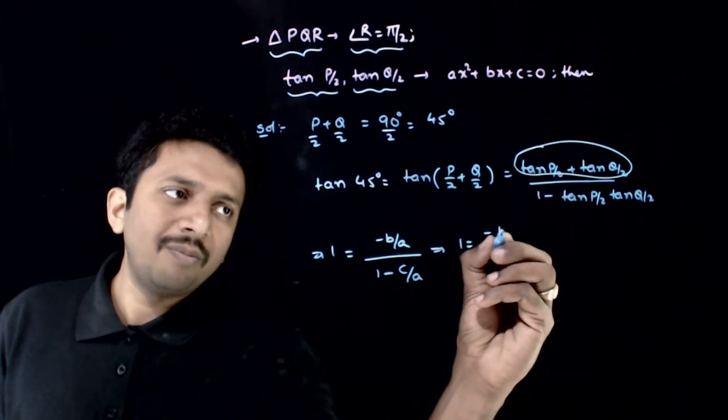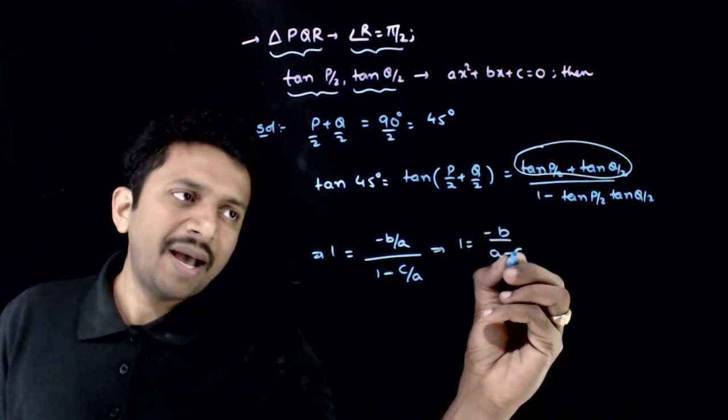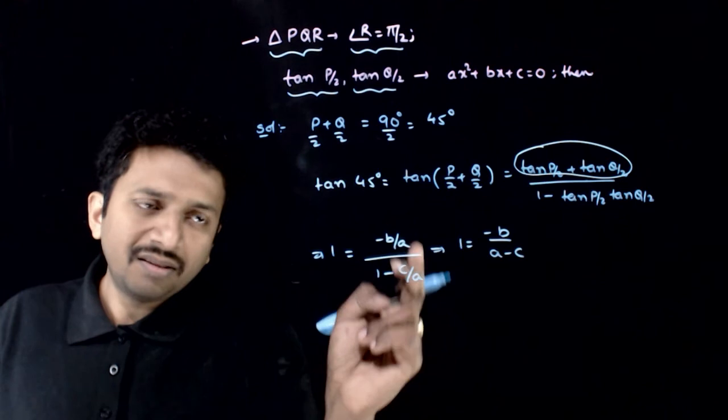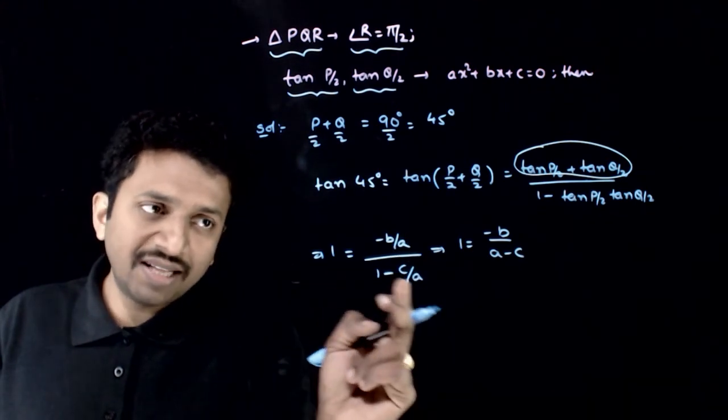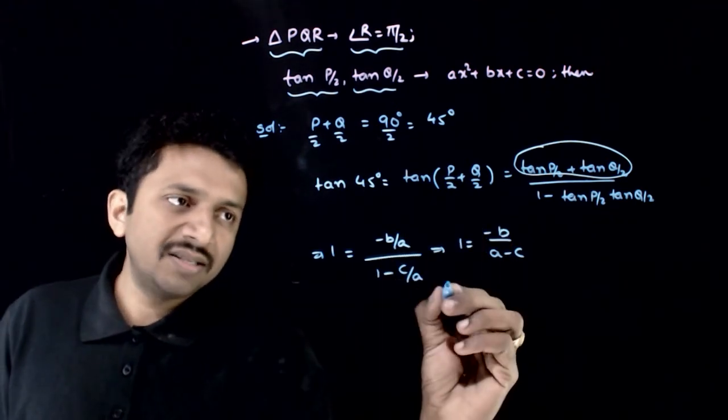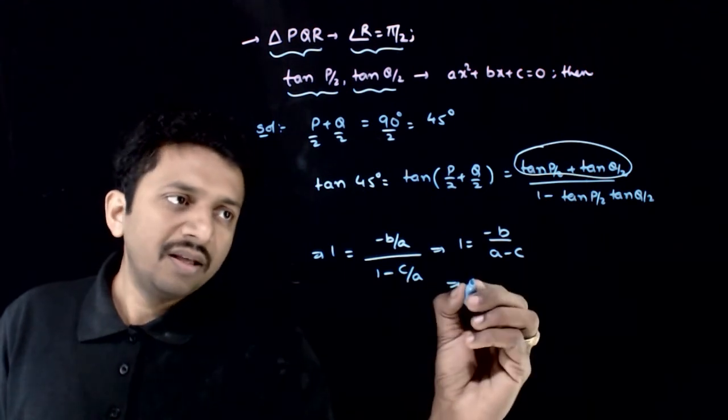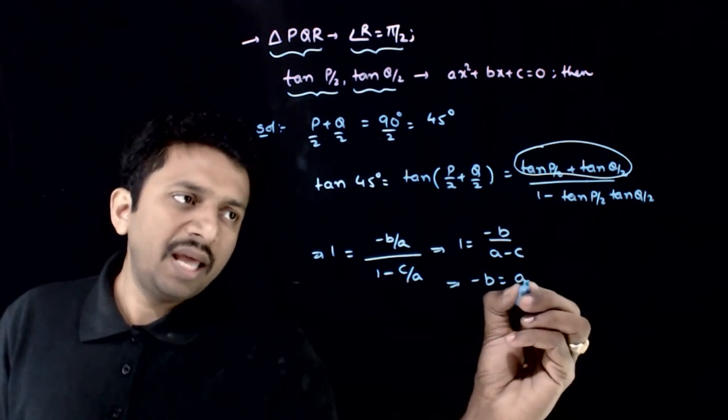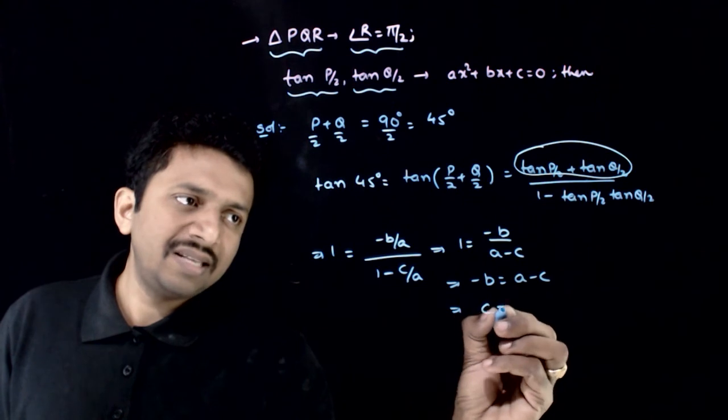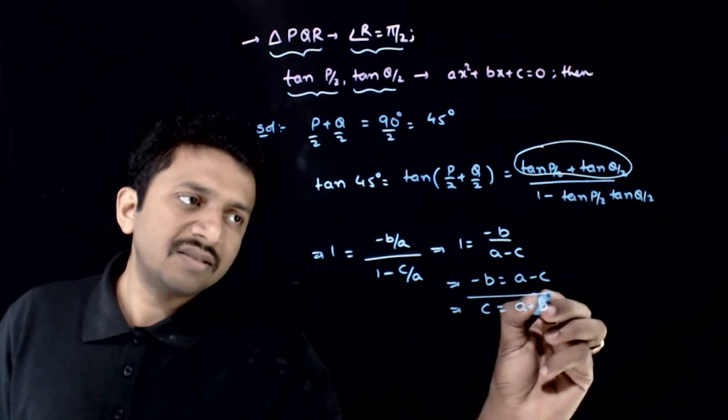this implies 1 is equal to minus B by A minus C. The denominator gets cancelled after taking the LCM. So, minus B by A minus C, this implies minus B is equal to A minus C. This implies C is equal to A plus B.